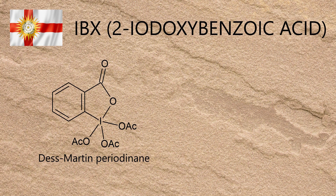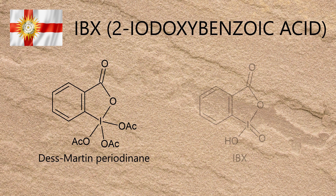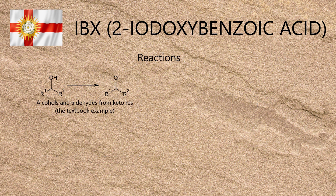If you've studied undergraduate organic chemistry and were paying attention during lectures, there's a good chance you'll have heard of Dess-Martin periodinane, or triacetyl-iodoxybenzoic acid. It's an oxidising agent containing iodine in the plus 5 oxidation state. Both it and its precursor IBX, which is 2-iodoxybenzoic acid, can selectively oxidise alcohols to aldehydes without overrunning to the acid, which is the reaction that got Dess-Martin periodinane into the textbooks.